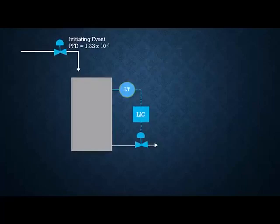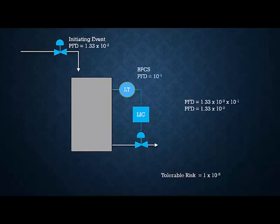In LOPA, you look at protection layers of what else can prevent that fatality from occurring. The next layer would be the BPCS system: a level transmitter, a level controller, control valve. Tank level gets high, control valve opens, tank level goes down, everything's good, right? But not quite, because the BPCS should work, but nothing works 100% of the time. A BPCS typically has a probability of failure on demand of 0.1. I'm going to go into that later, just trust me for now. So if its probability of failing is 0.1 and the initiating event is 1.33 times 10 to the negative two, you multiply them together and the odds of them both failing is 1.33 times 10 to the negative three. Better, but still not tolerable. You still have too much risk with this situation. You need another layer of protection.